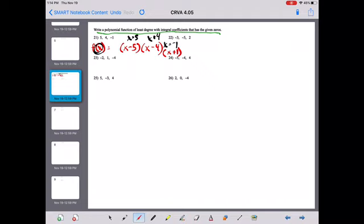So this polynomial has three factors, x minus 5, x minus 4, and x plus 1. And now we're going to write this polynomial, not in factored form, but in standard form. So I just now need to multiply these factors together.